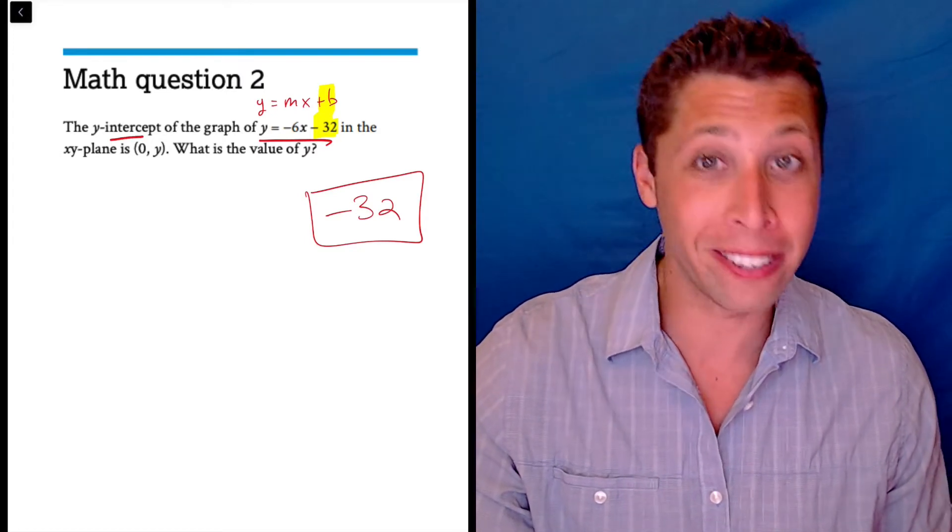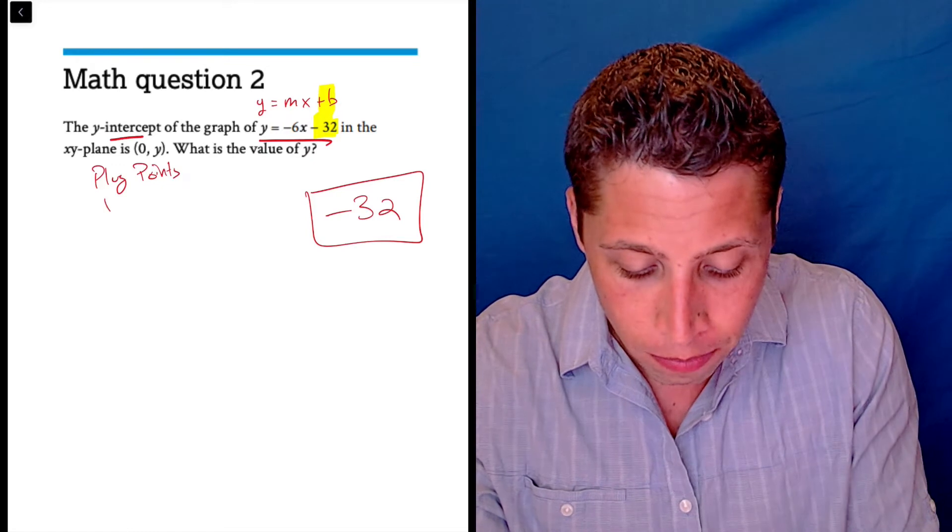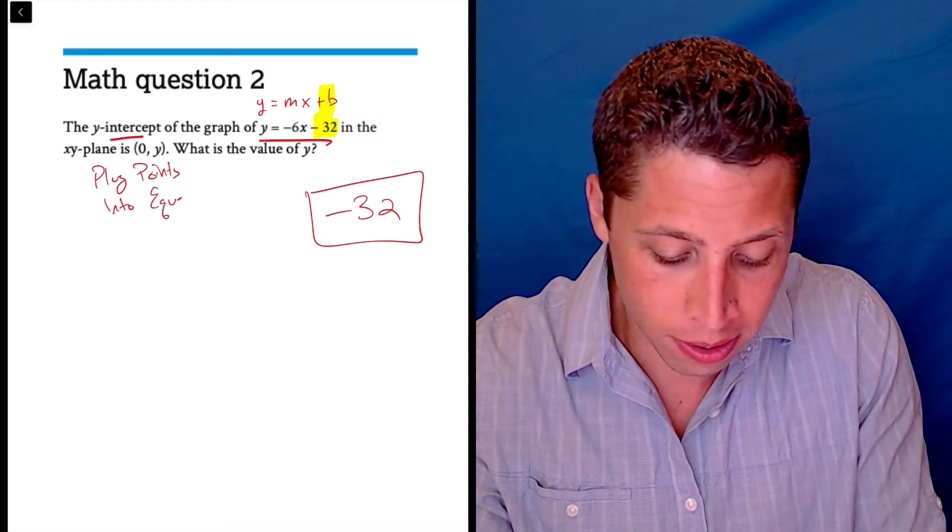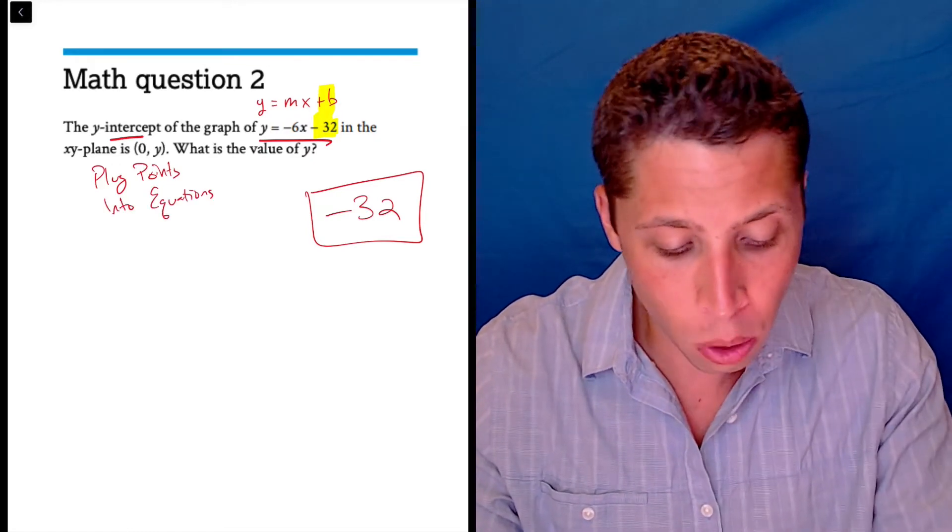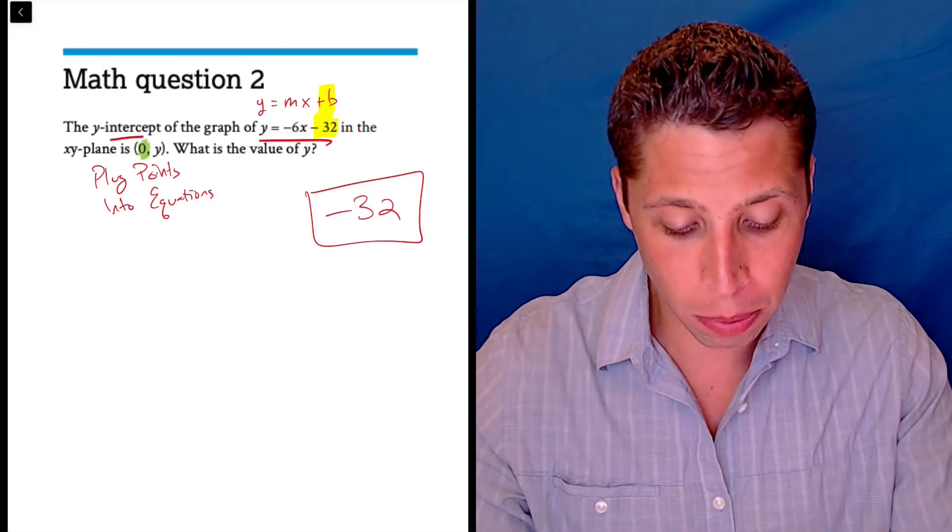But if you don't know it, we still have another strategy we can use called Plug Points Into Equations, because any time we talk about intercepts, we know one of our points, or at least half of it, is going to be zero. So we can just plug that in.